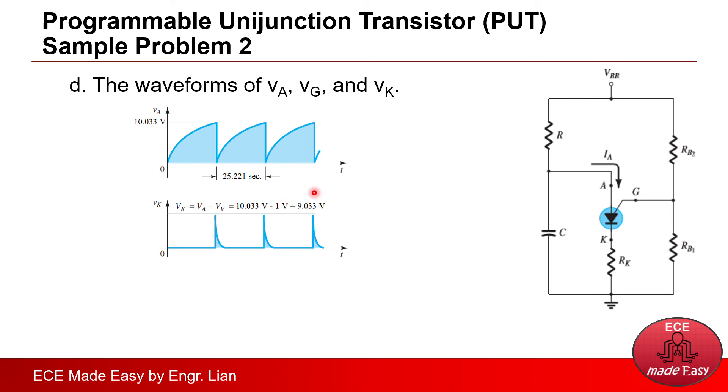And lastly, the waveform across VG. So VG is being controlled by the resistors and the supply VBB. That's why the formula for VG is eta times VBB...